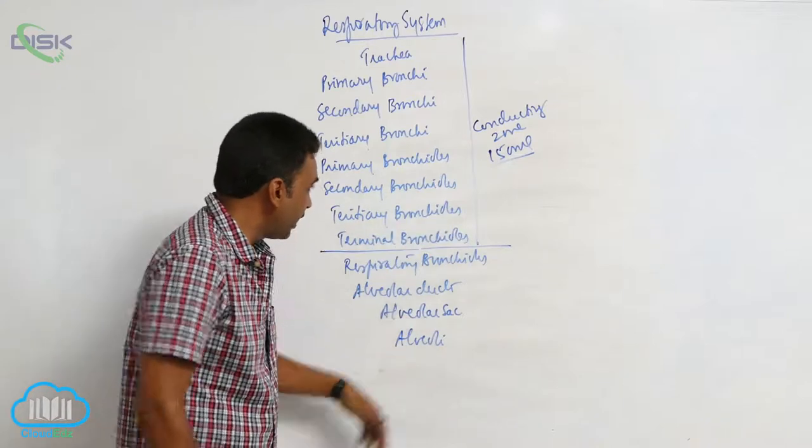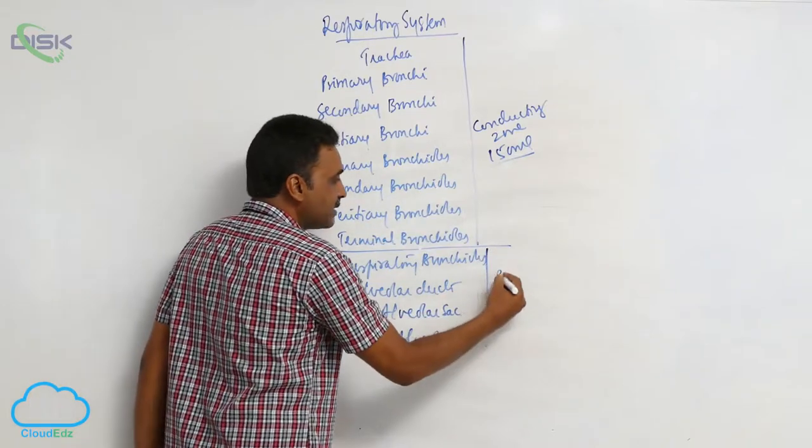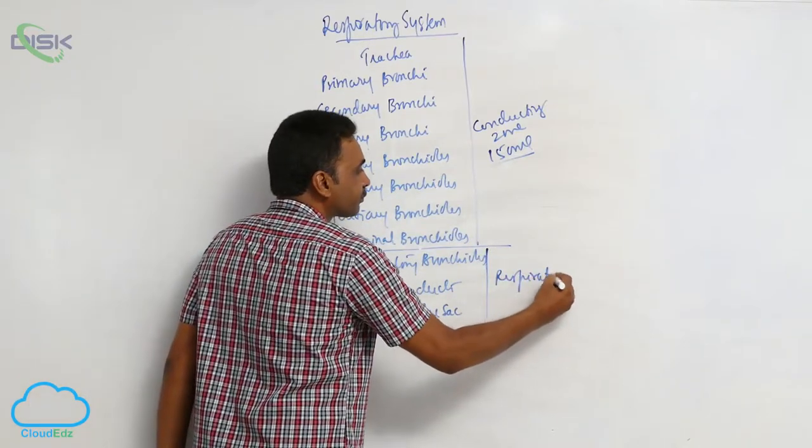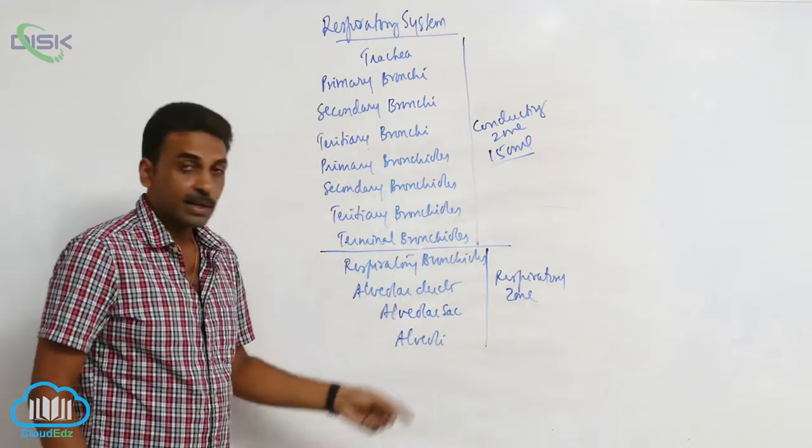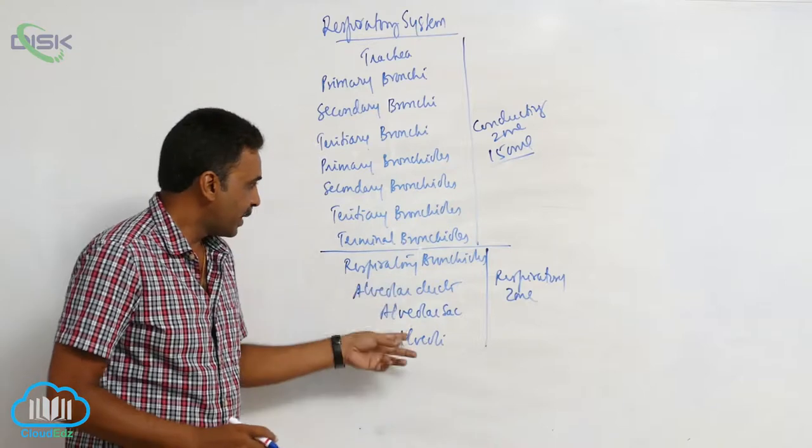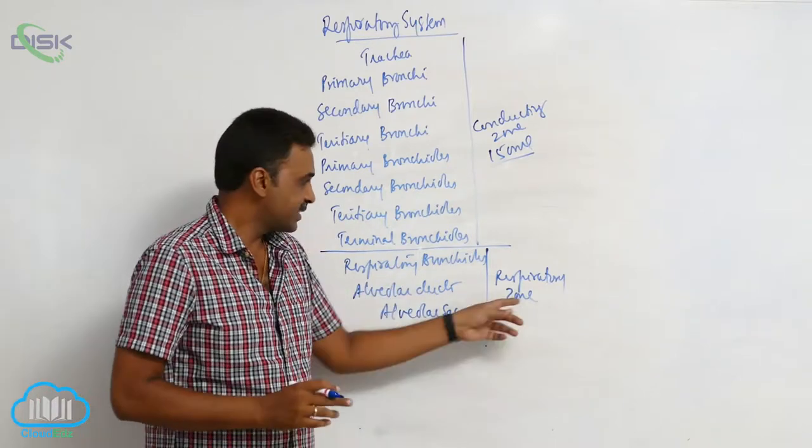But the remaining area is the respiratory zone. Respiratory bronchioles up to alveoli, this is the respiratory zone.